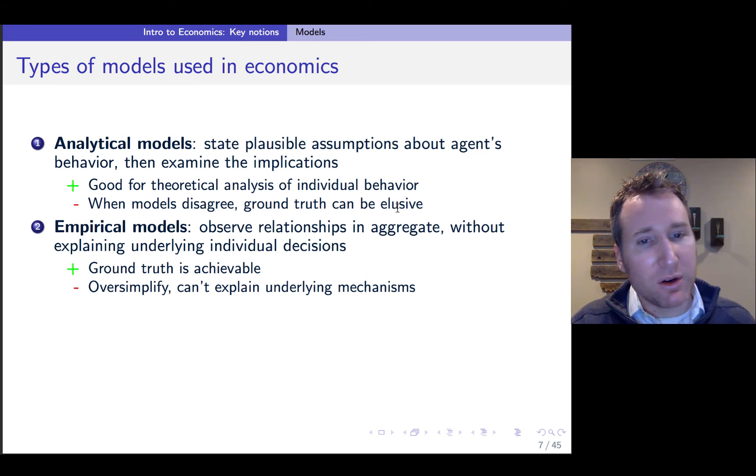So on the other side, you have empirical models, which don't presume very much in terms of how you expect behavior to occur. But instead, you're just observing what occurs, often in aggregate, and then not concerning yourselves with individual decisions. The plus side here is that because it's data driven, you have ground truth sort of by definition.